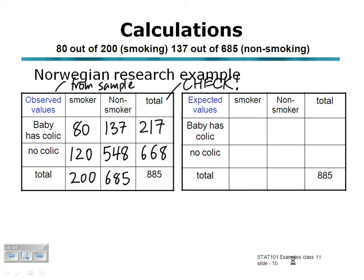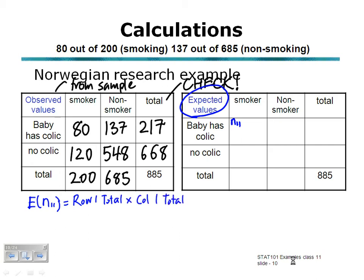To calculate the expected values from this two-way table data, we use the formula for finding the expected value for any row and column — we'll call it E. We're taking the expected value for the first row and first column, that's the smoking mothers whose babies have colic, which we call N11. We use the formula: row one total multiplied by column one total, divided by overall total. This formula would be found on a formula sheet for chi-square values.